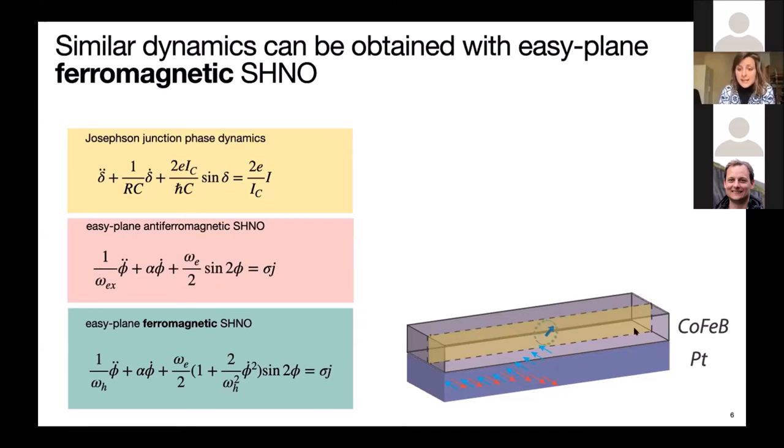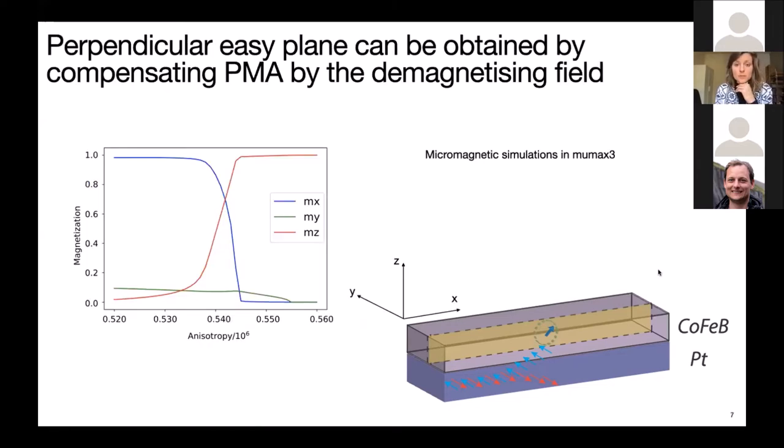And we need an easy axis that is here given by this long shape anisotropy, which makes it possible for the magnetization to make just a single turn in this easy plane, and then quickly relax towards this initial position along the easy axis. So we have performed micromagnetic simulations in MuMax to show that we can indeed obtain such perpendicular easy plane materials. The approach we use is to take a perpendicular magnetic anisotropy material, such as cobalt iron boron deposited on platinum, and then we adjust its thickness to compensate this perpendicular magnetic anisotropy by the demagnetizing field. This is what you see here. The transition happens when the magnetization switches from the x orientation along the easy axis in blue to the perpendicular axis in red.